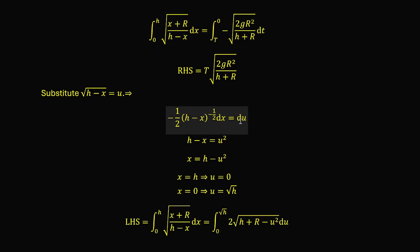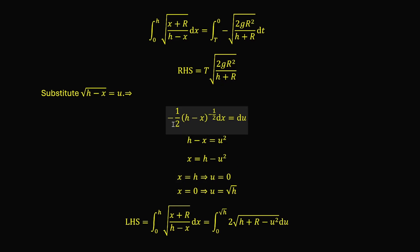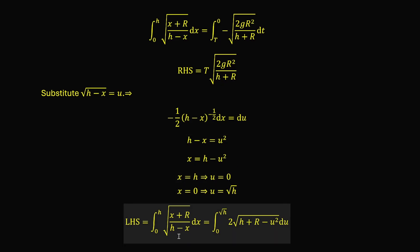Considering du also carries a negative sign, we reverse the order of the new integration limits to remove the minus sign. This puts the left-hand side integral as the integral from 0 to √h of 2 times the square root of (h + r − u²) du. The new integral has a familiar form: it is the square root of a quadratic, for which we can use trigonometric substitution.